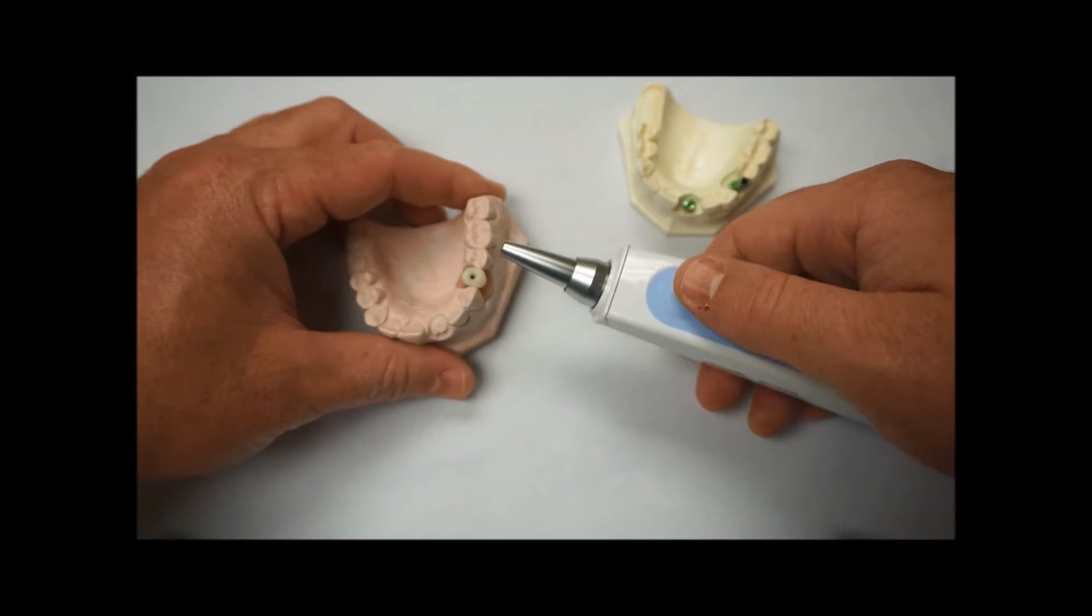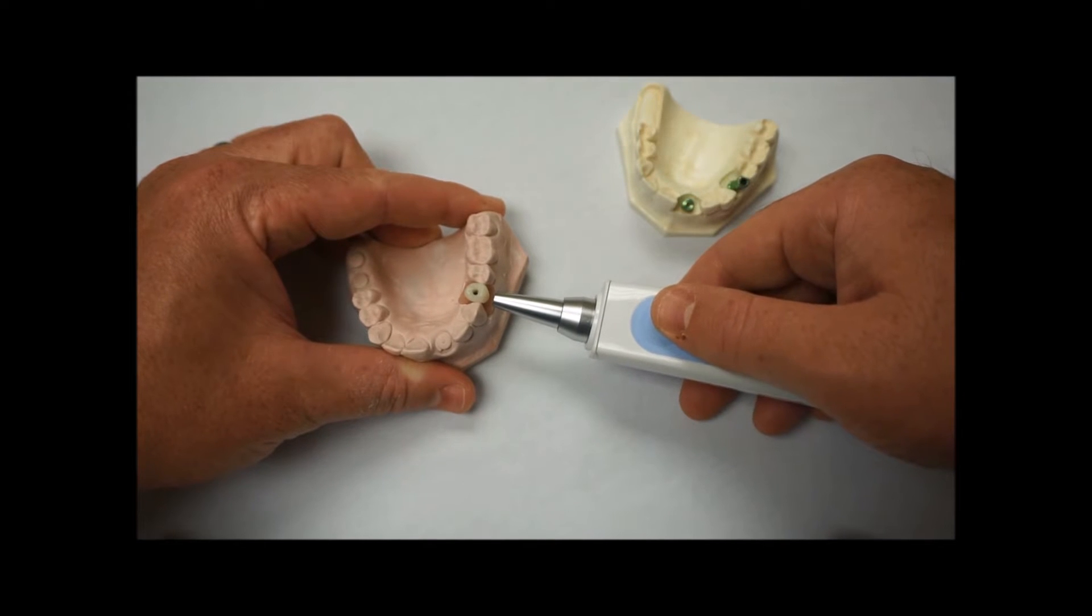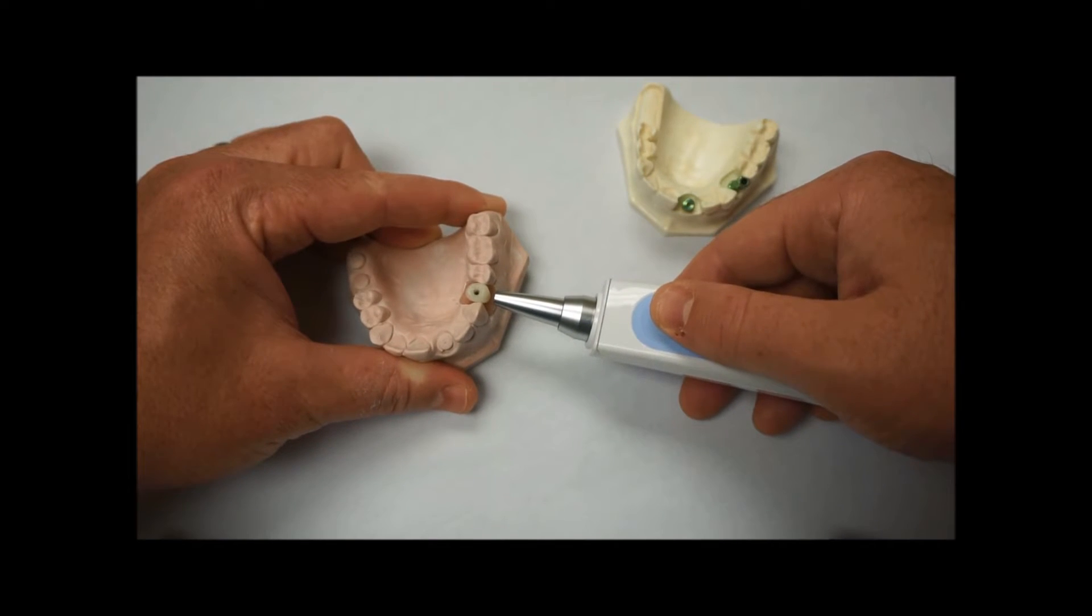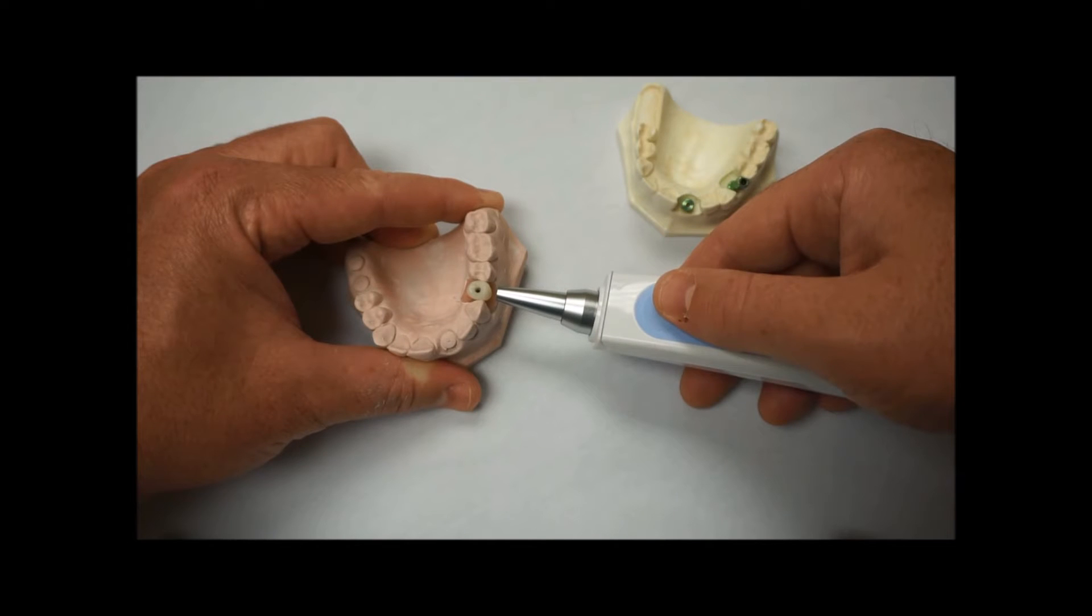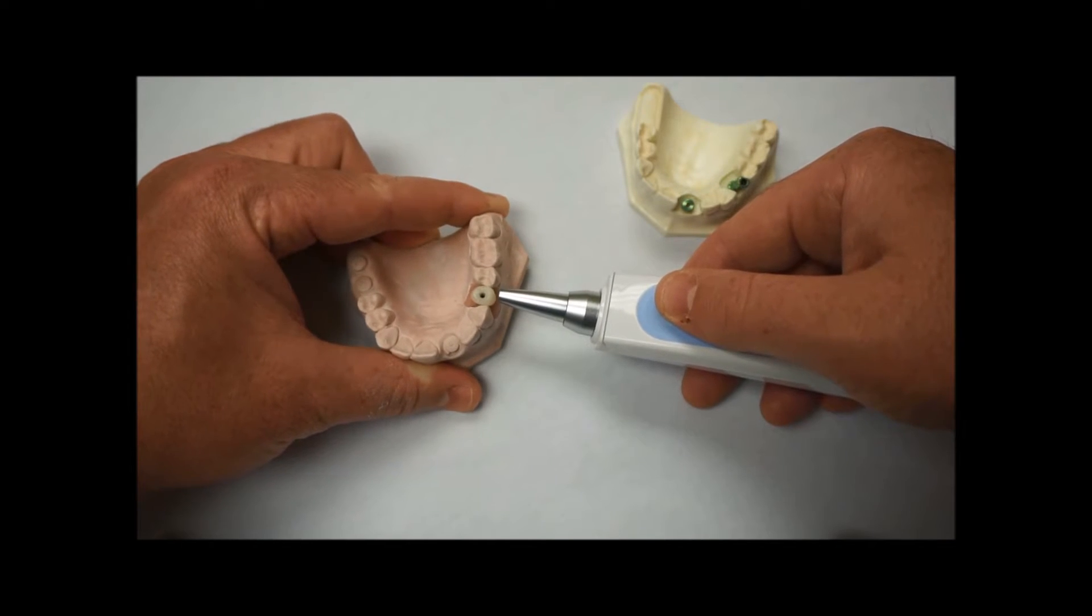The way you use this is you'll hold the probe tip about a millimeter or two from the implant or from the crown that you're testing, and you just want to hold it as close to 90 degrees to it as possible. As you can see, I'm 90 degrees to this crown.